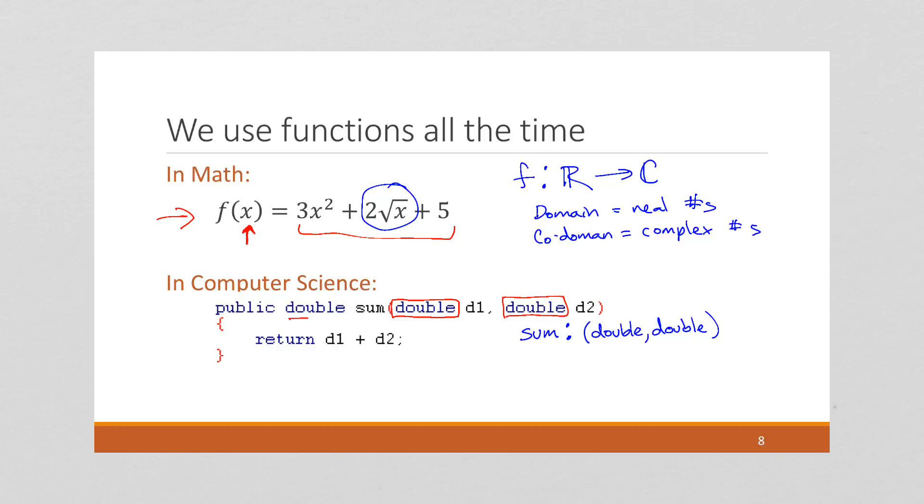All right. So it's a pair of doubles. And what's the output? Well, the output is also a double here. So that means we're going to have a double. So our domain is the set of all pairs of doubles. And our codomain is the set of all doubles, right? And those two are different. They're not the same thing.